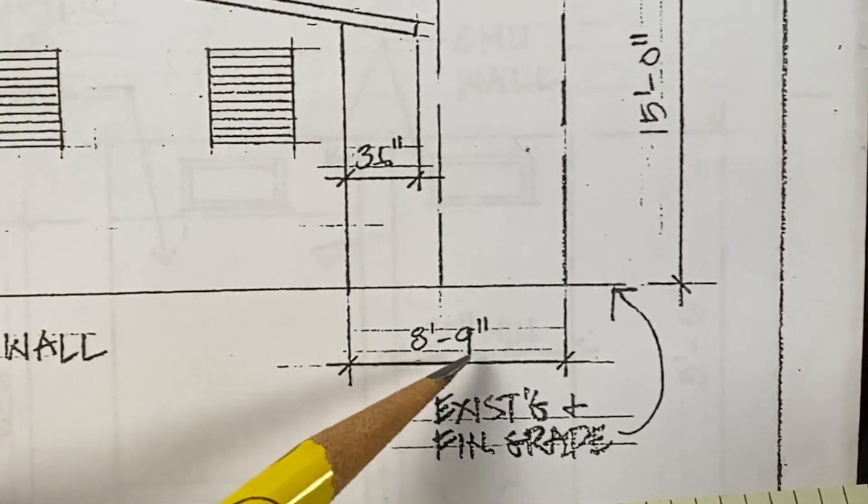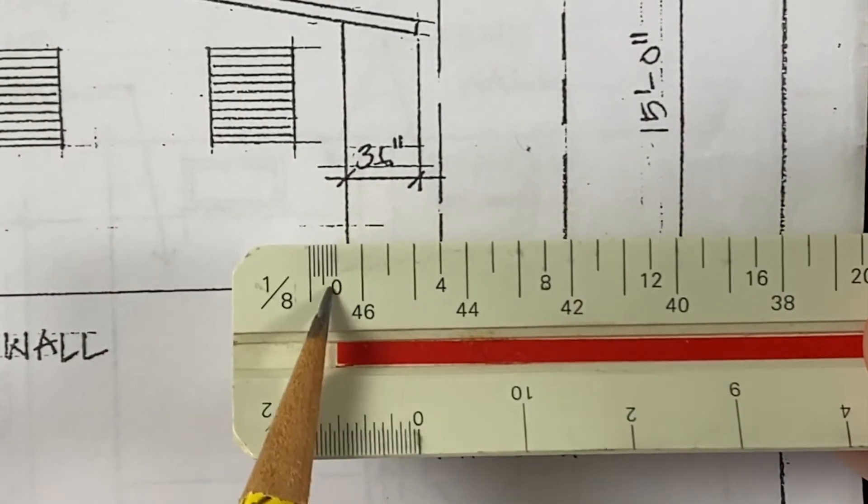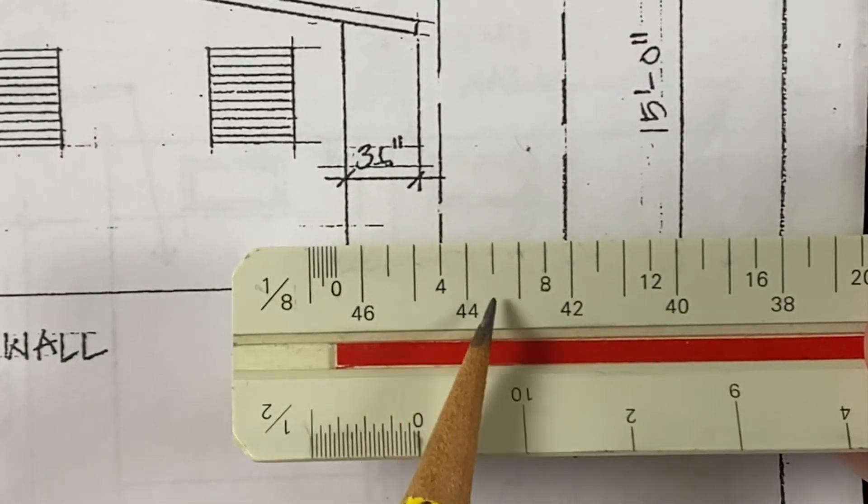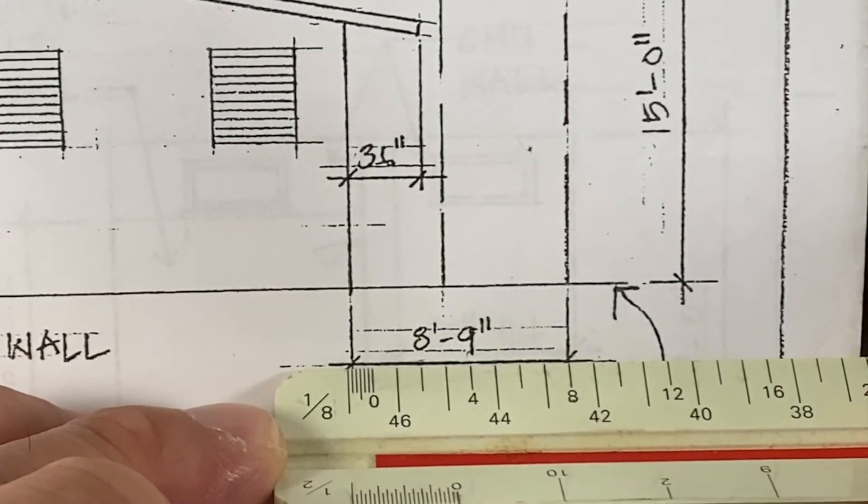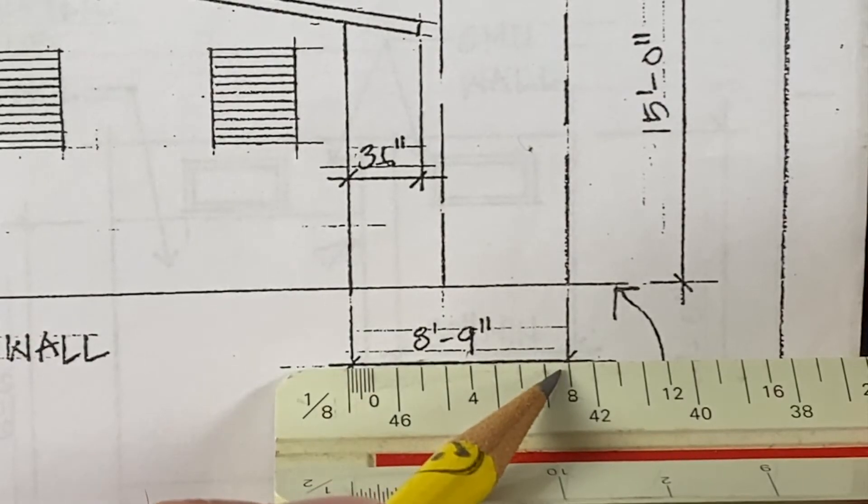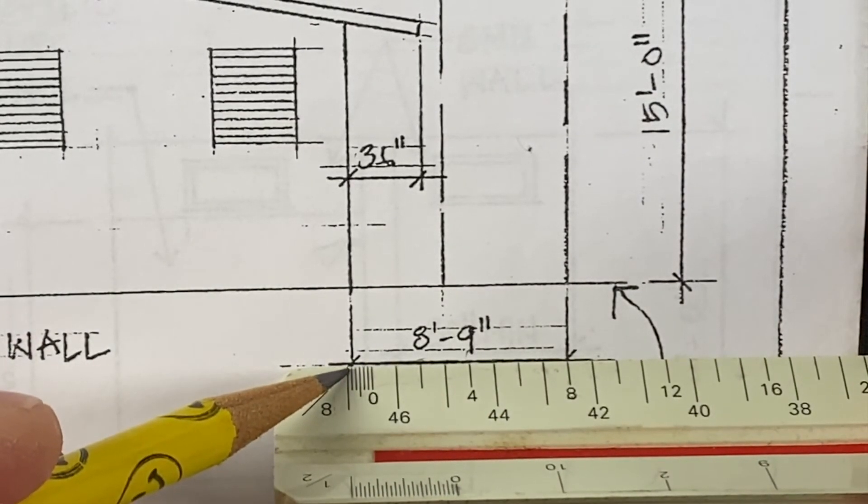And we'll verify this eight foot nine inch dimension. Where each eighth of an inch equals a foot. And line up the eight foot mark on one end, and the nine inch mark on the other.